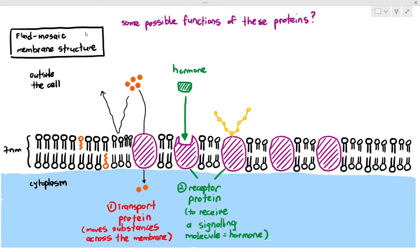Glycoproteins can also act as receptor proteins, receiving signaling molecules such as hormones — the hormone drawn in red is complementary to the glycoprotein. The receptor protein on the left is just a protein molecule complementary to a hormone, while the receptor protein on the right is a glycoprotein with an extra carbohydrate chain that also helps to capture complementary and different types of hormones.